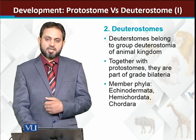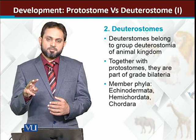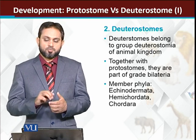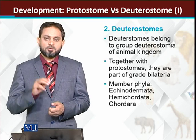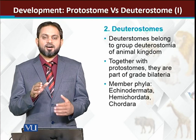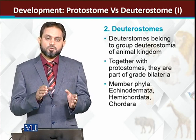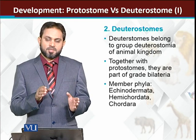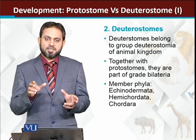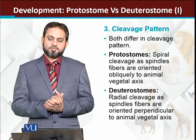So overall, the top three phyla — echinodermata, hemichordata, and chordates — belong to deuterostomes. جبکہ ان کو چھوڑ کر نیچے جتنے بھی triploblastic phyla ہیں، starting from platyhelminthes, they are all included in the protostomes.